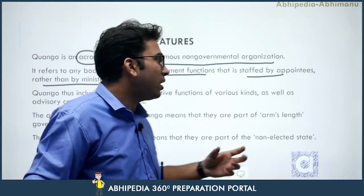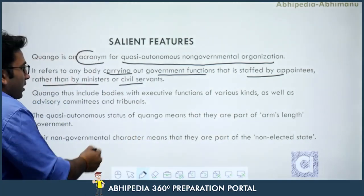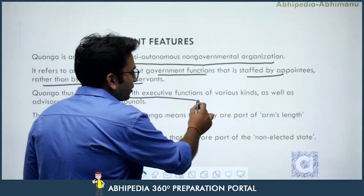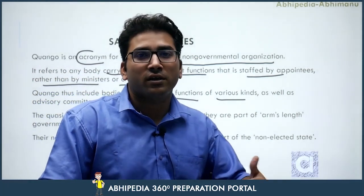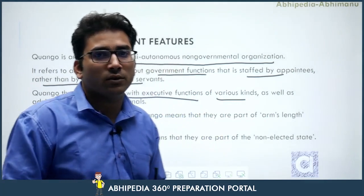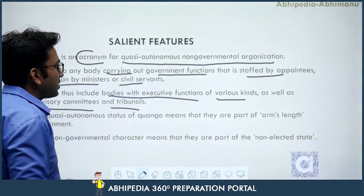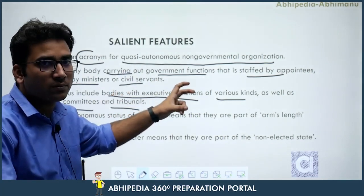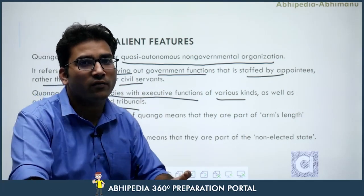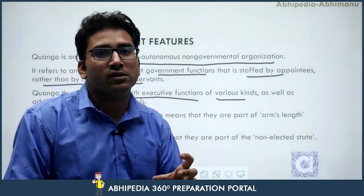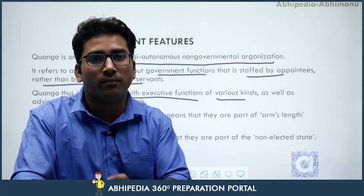QUANGOs include bodies with executive functions of various kinds — documentary work, field work, research work, development work. They also include advisory committees and tribunals. The term 'quasi' simply means somewhat judicial, and tribunals are a form of judicial organization known as an Alternative Dispute Resolution mechanism, or ADR.